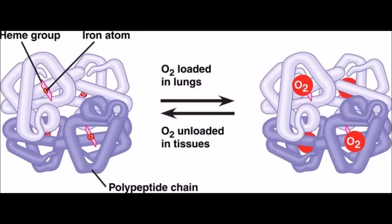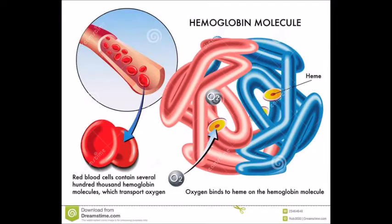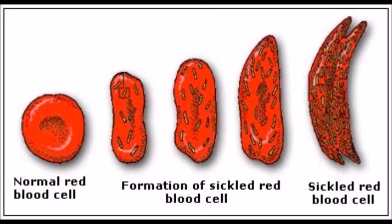Red blood cells contain an iron-rich protein called hemoglobin. This protein carries oxygen from the lungs to the rest of the body. Sickle cells contain an abnormal hemoglobin called sickle hemoglobin, or hemoglobin S. Hemoglobin S causes the cells to develop the sickle shape it is known for.